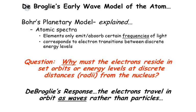why we have atomic spectra—the fact that elements only emit and absorb certain frequencies of light, and it corresponds to the electron transitions between discrete energy levels.